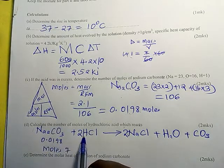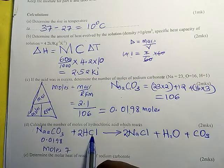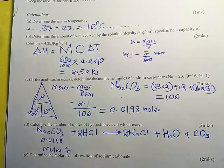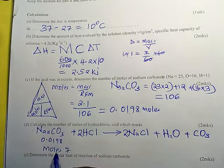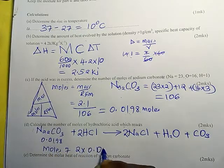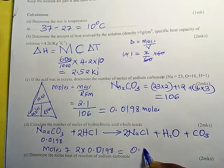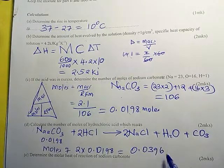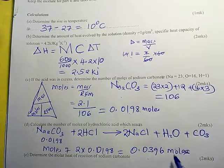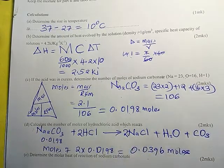Since the ratio is 1:2, moles of HCl = 2 × 0.0198 = 0.0396 moles. These are the moles of HCl that reacted with the sodium carbonate.